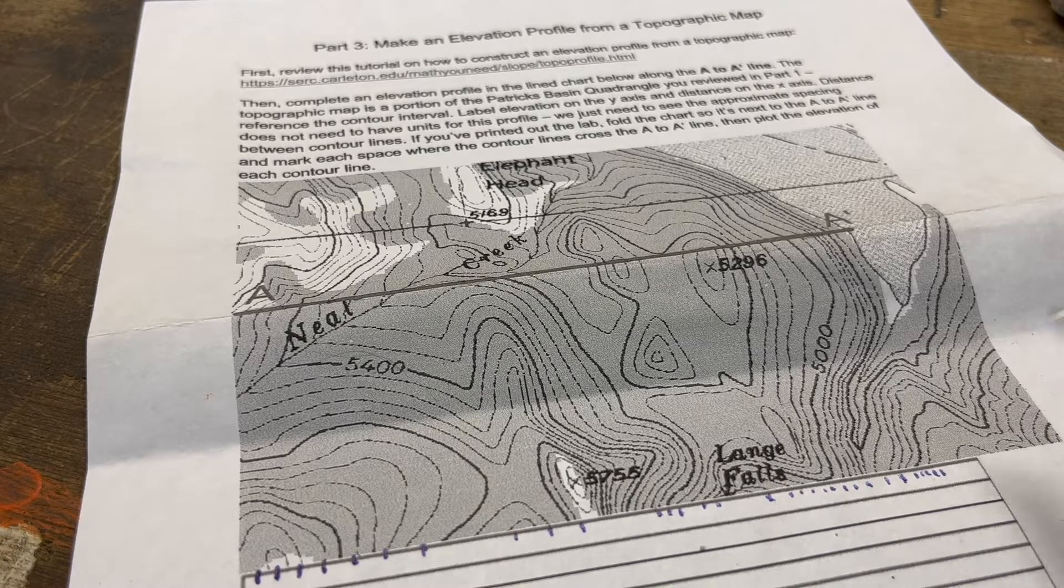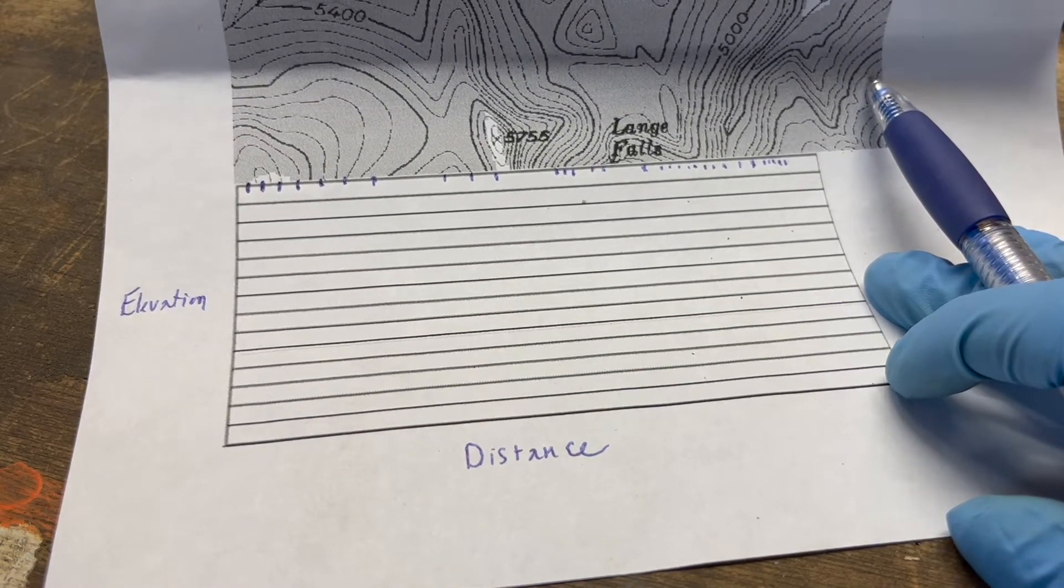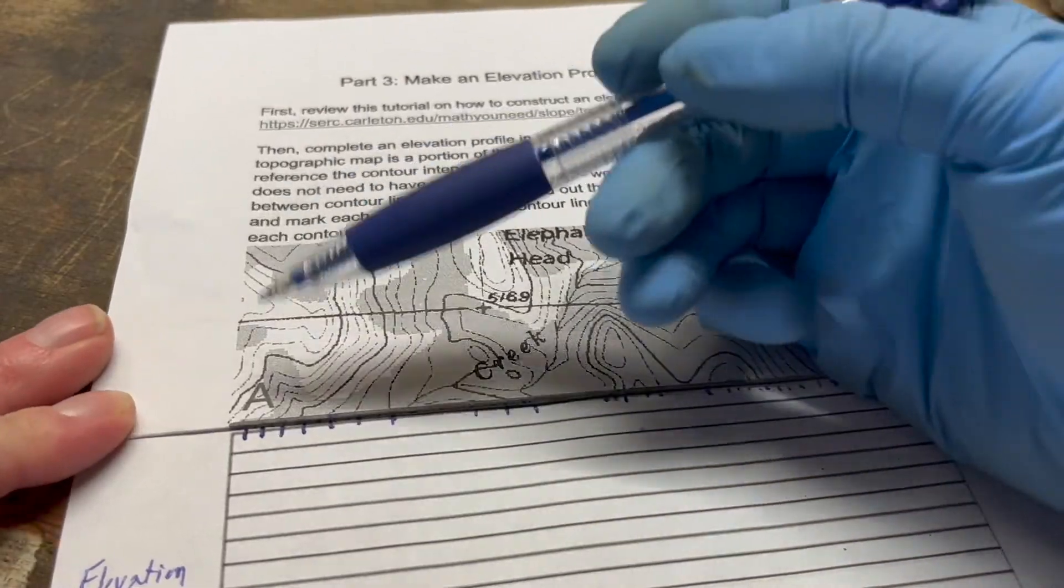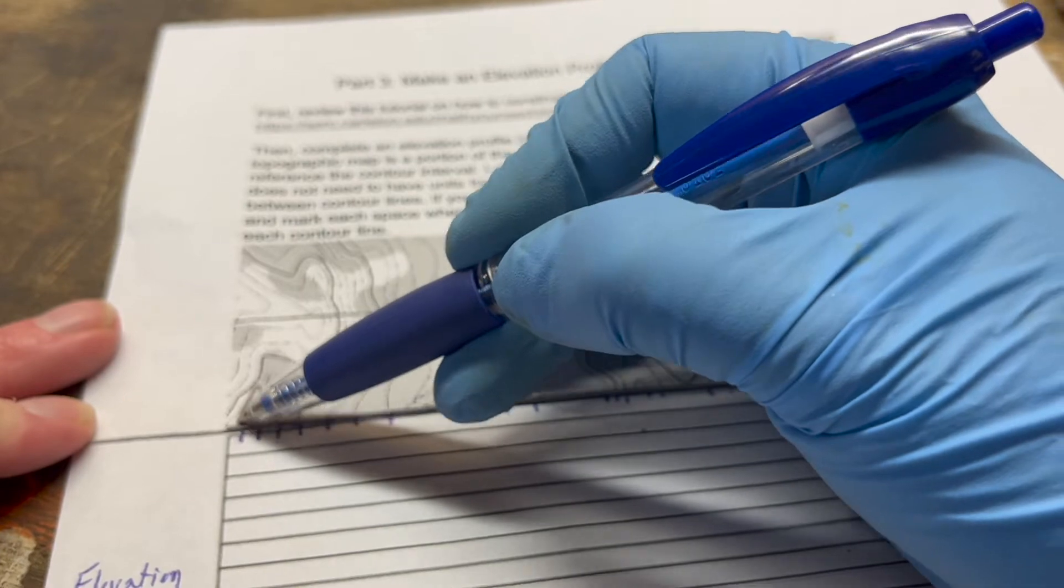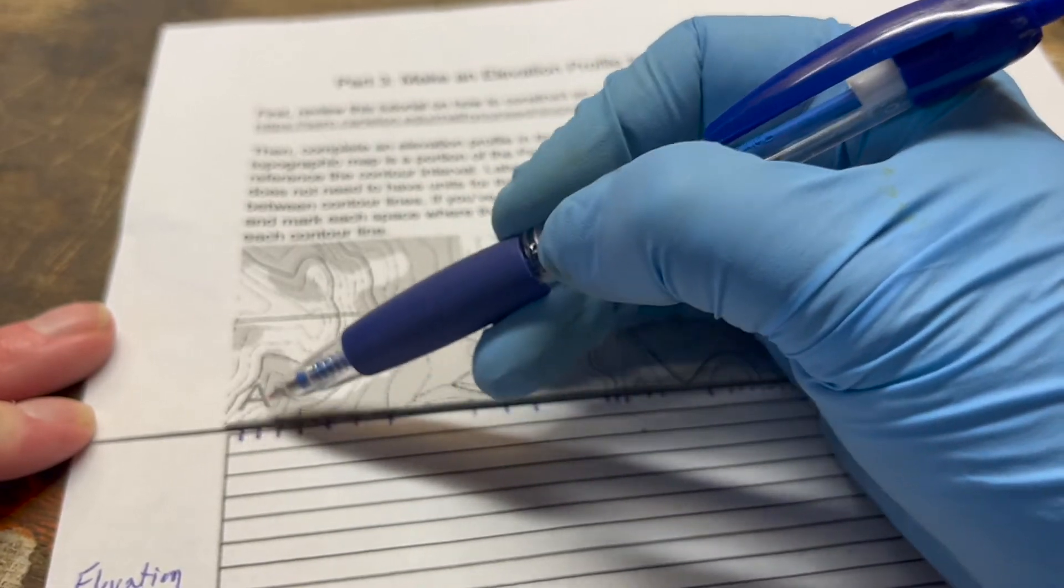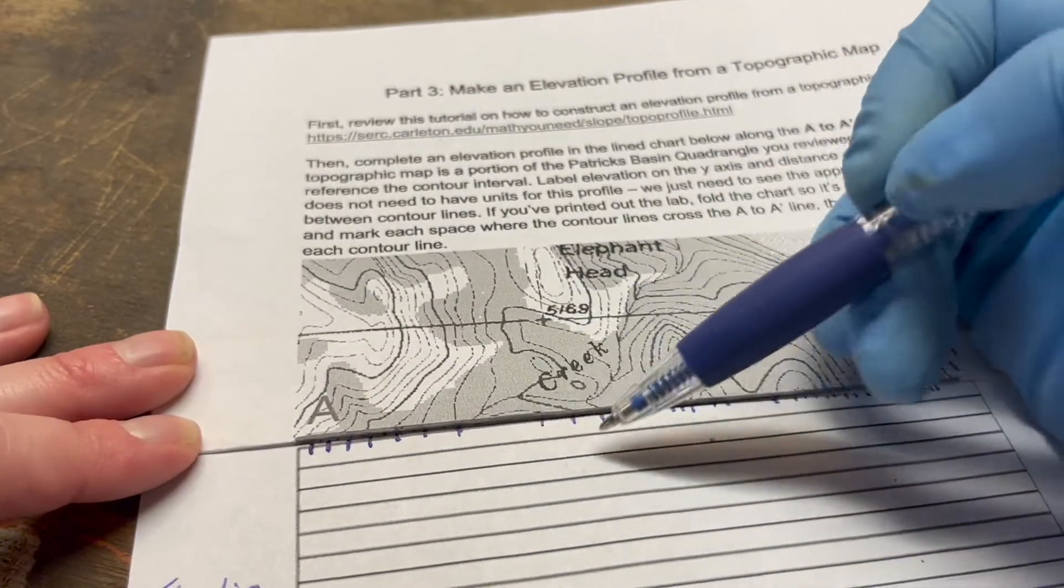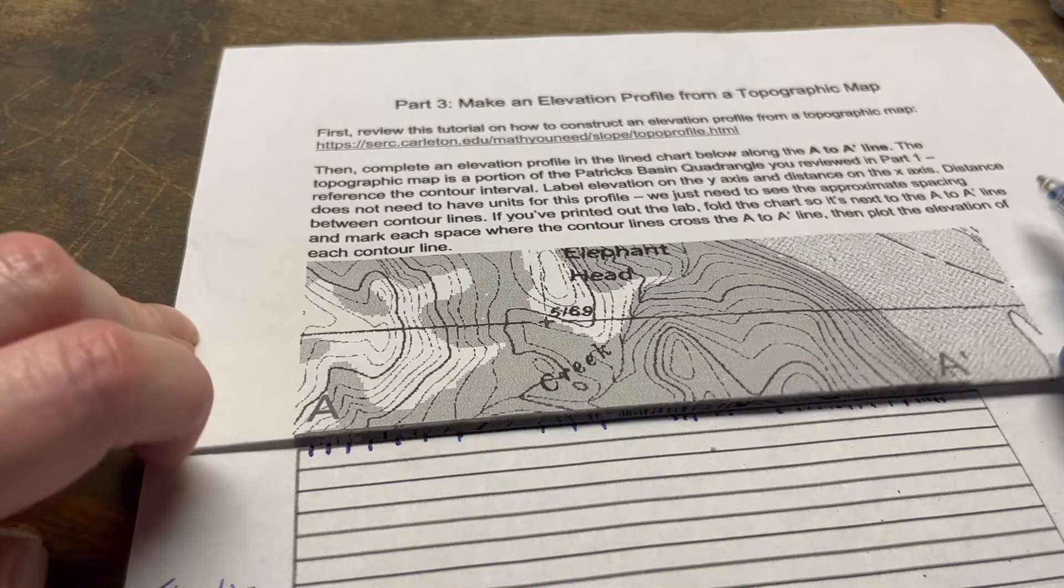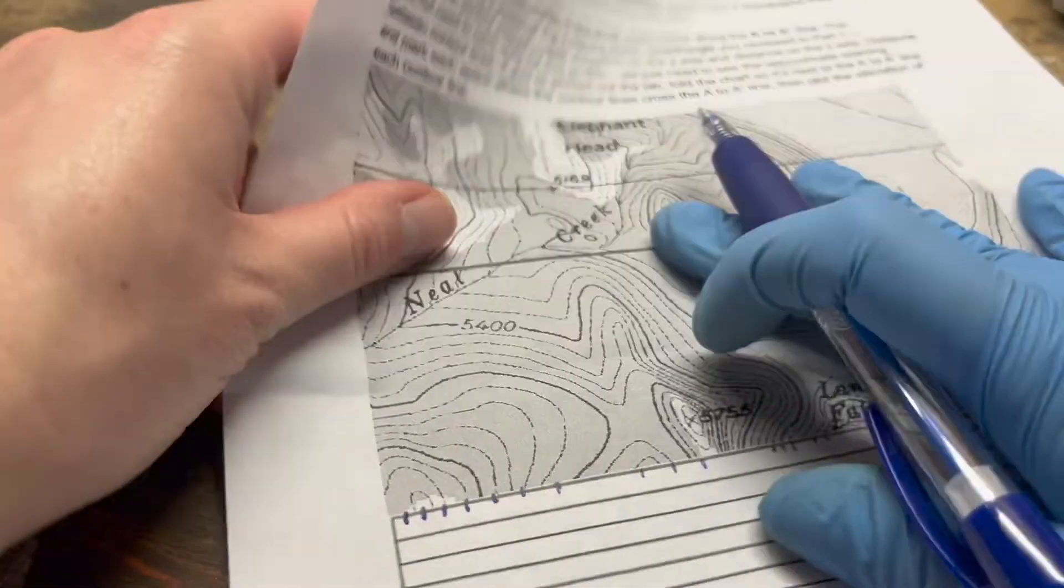First off, you would label elevation on the Y-axis, distance on the X-axis, and then just take this, fold it so A to A prime is here. Everywhere you see a contour line across this line, the A to A prime, you make a tick mark that shows you the spacing that you'll use to construct the profile. With that, you need to study the map a little bit.